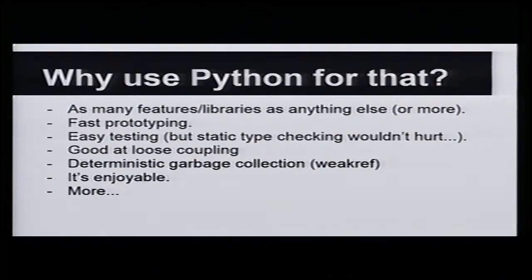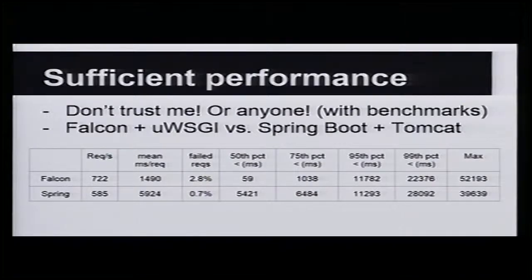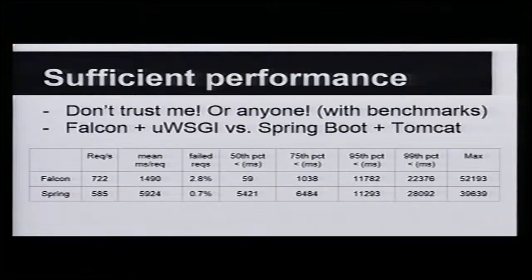Python can have deterministic garbage collection, which is useful because your app has a RAM limit and if it exceeds it, CloudFoundry or other PaaS platforms like Heroku will kill it. I was worried about performance — would Python be ten or a hundred times slower than our Spring Boot Java on Tomcat configuration? I tried Falcon and a micro WSGI application and compared them on a two-core, one-gig-RAM virtual machine.